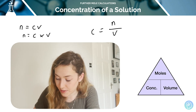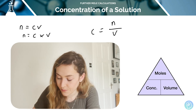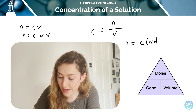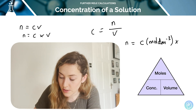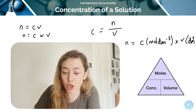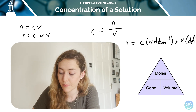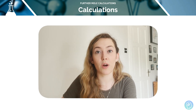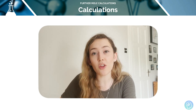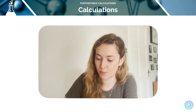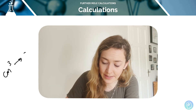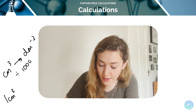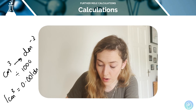The units are really important. n in moles equals concentration in mol dm⁻³ times volume, and volume must be in decimetre cubed. So we need to convert sometimes. If the volume is given in centimetres cubed, you need to divide by 1000 to convert to decimetre cubed, because one centimetre cubed equals 0.001 decimetre cubed.